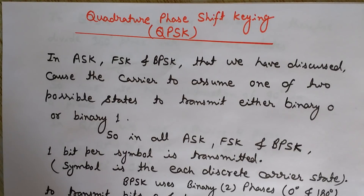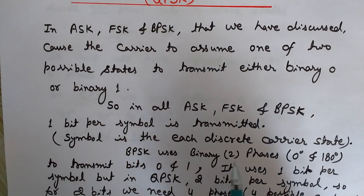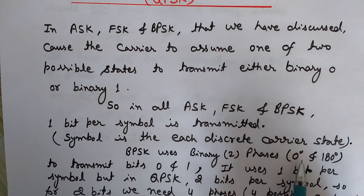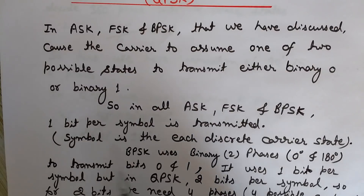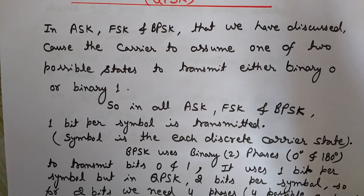In ASK, FSK, and BPSK, one bit per symbol is transmitted. Each discrete carrier state transmits only one bit. BPSK uses binary — meaning two phases, that is zero degrees and 180 degrees — to transmit bits zero and one, and it uses one bit per symbol.